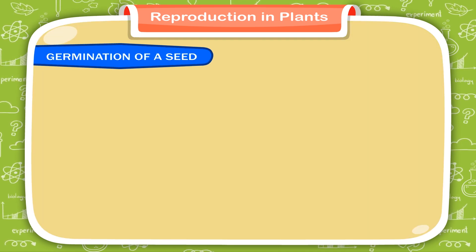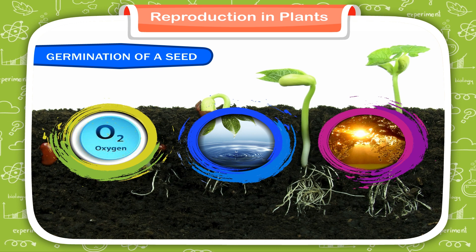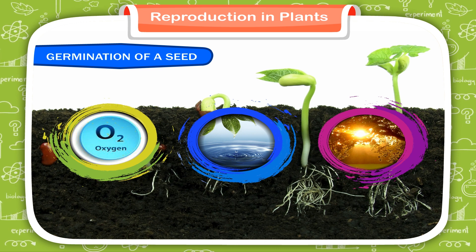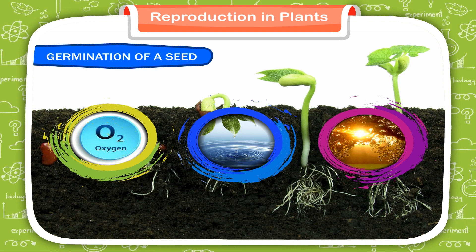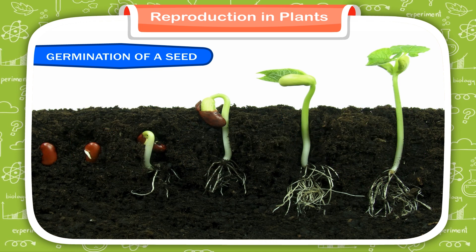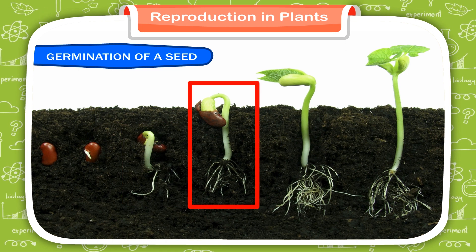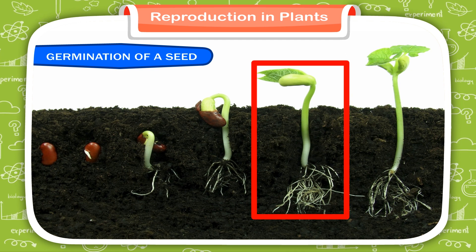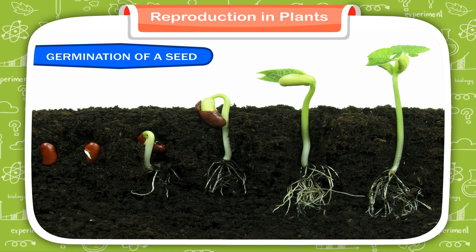Germination of a seed. A seed needs oxygen, water and warmth to grow into a new plant. Even if one of the three is not available to the seed, it will not grow. When a seed is exposed to the proper conditions, water and oxygen are taken in through the seed coat. The embryo's cells enlarge. Then the seed coat breaks open and a root emerges first, followed by the shoot that contains the leaves and the stem. This process of the growth of the baby plant from the seed into the young plant called the seedling is termed as germination.